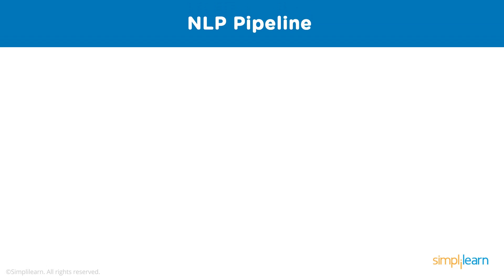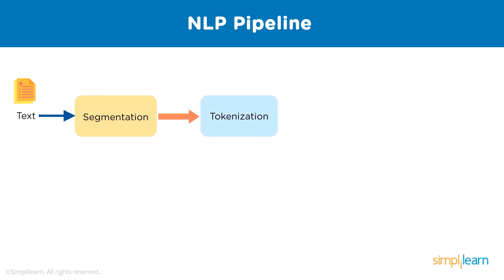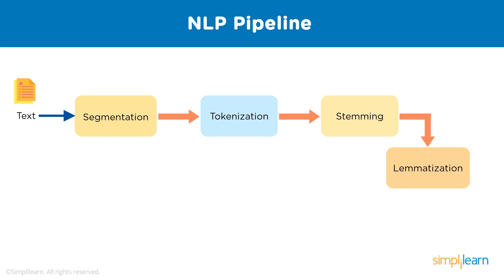A pipeline is a set of data processing elements connected in series, where the output of one element is the input of the next. It represents the various steps in our computation and the order in which they occur. In this pipeline we are parsing our data — converting it from one form to another. The text is first broken into segments, then converted into smaller tokens, and then the word stems of all tokens are found.